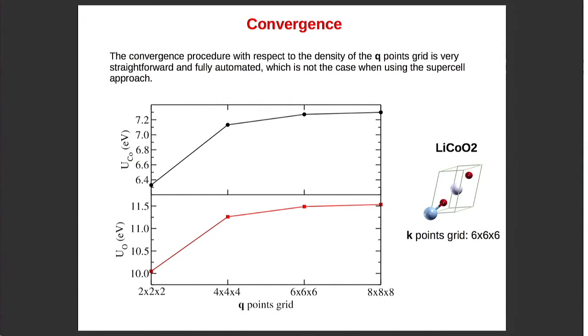And then just to show you how we can converge the values of the U parameter. This is the U value for the cobalt and this is for oxygen, and we see that when we increase the q grid 2x2x2, 4x4x4, 6x6x6, and 8x8x8, it converges monotonically, and already for q point grids 6x6x6 it's already satisfactory. It depends which accuracy you want. And k point grid was used here 6x6x6, so you see we can use different grids for k points and q points.